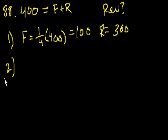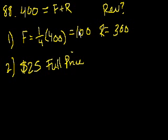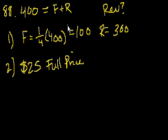Statement 2 says the full price of a ticket was $25. We know that 25 times 100, or $2,500, were generated from the sale of full price tickets. But we still don't know what the reduced price is — they don't tell us how much they reduced the price. Was it 25% off? 50% off? We don't know. So unless we know the price of the reduced price ticket, we can't figure this out. Not enough information to solve the problem.